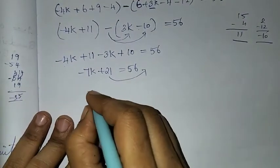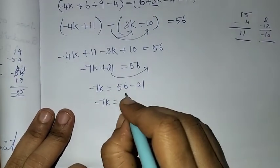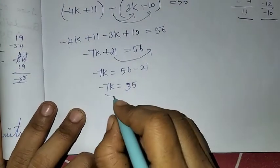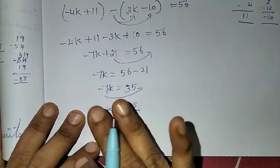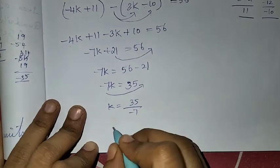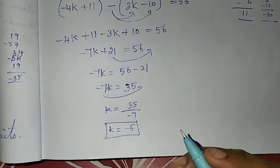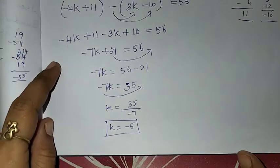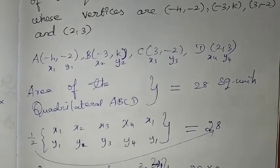Now k value: 56 plus 21 gives minus 21 transposed; 56 minus 21 is 35; 35 equals minus 7k; dividing both sides by minus 7, we get k equals minus 5. So the value of k is equal to minus 5.